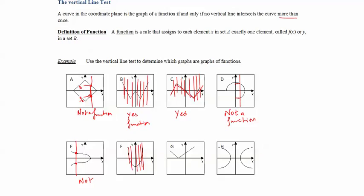For this graph, every time I draw any vertical line test, there is no vertical line that crosses the curve more than once, so yes, it is a function. For graph G, again, every time I draw a vertical line test it crosses the curve only once, so yes, G is a function.